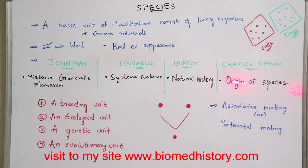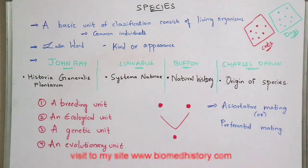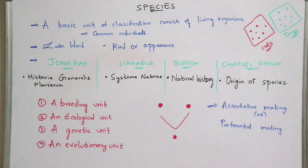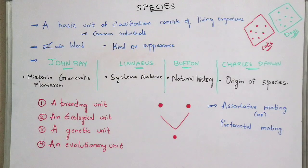Coming to the fourth one, Charles Darwin — the book written by Charles Darwin is Origin of Species. He gave many publications of this book. Origin of Species consists of different groups and types of books, all of which were published by Charles Darwin.